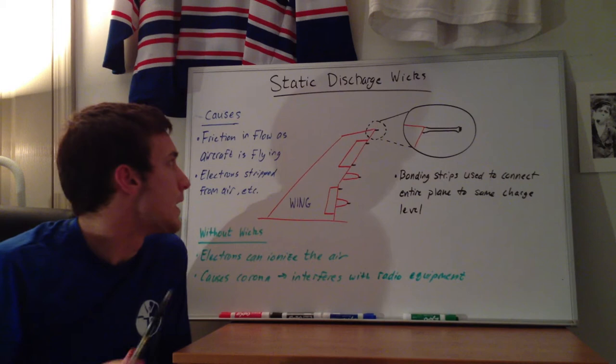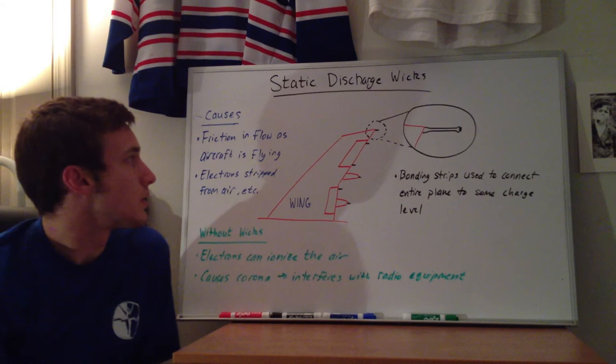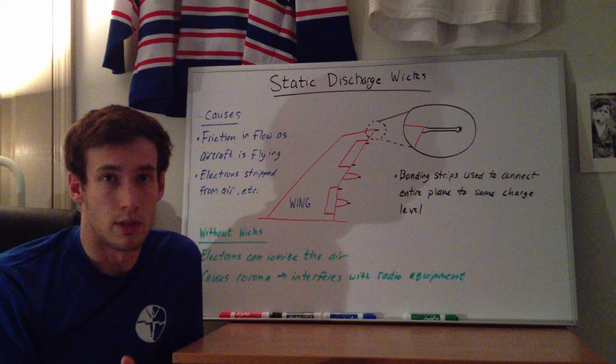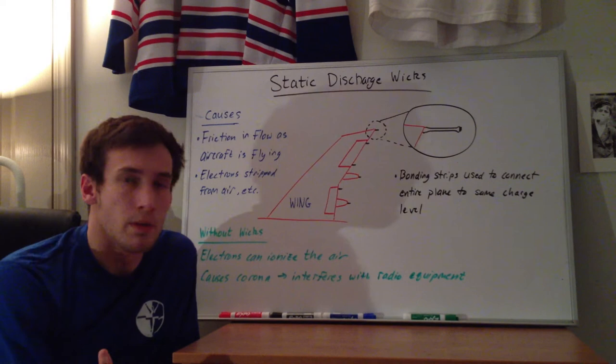I gave a kind of blown-up view here of what I've seen them look like, and there's a lot of different kinds since they're used on every type of aircraft. What happens is when your plane's flying through the air up in the atmosphere, there's friction with the air that it's flying through. As a result, electrons can get stripped from the air and become deposited on the aircraft wing or the fuselage — pretty much anywhere.